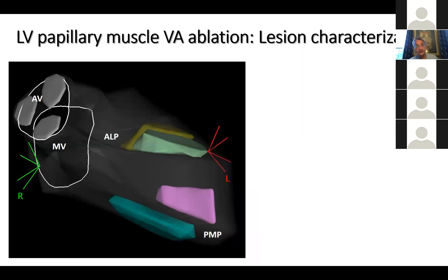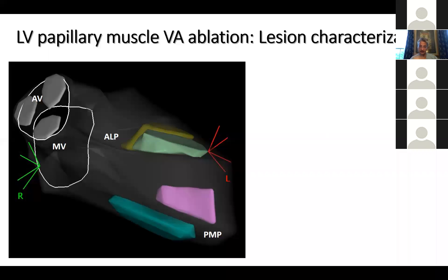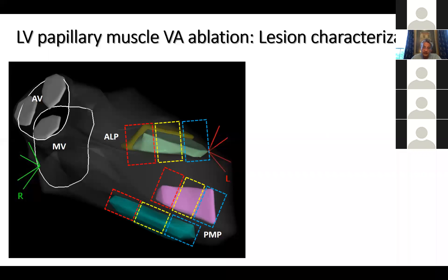Trying to understand how the papillary muscle and Purkinje sources behave is not an exact science. We're using the successful ablation site as the presumptive location of the source, which is obviously an approximation. The way we try to look at our experience is to divide the papillary muscle into three segments.